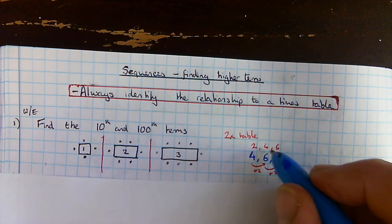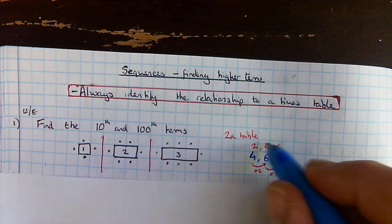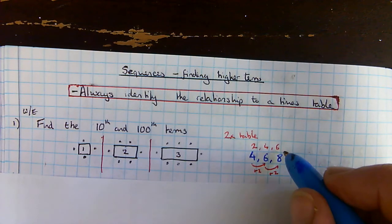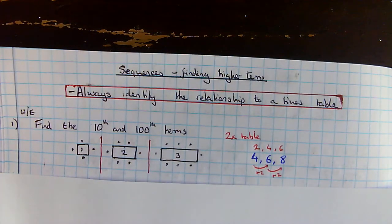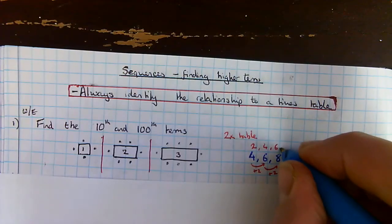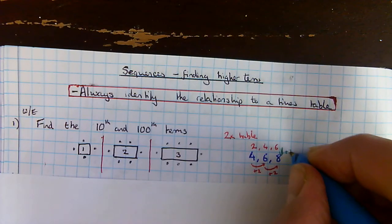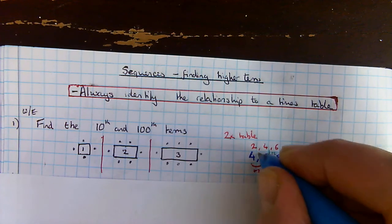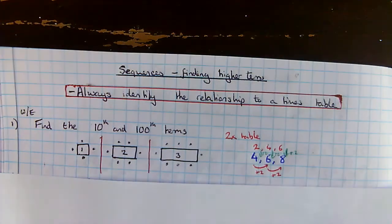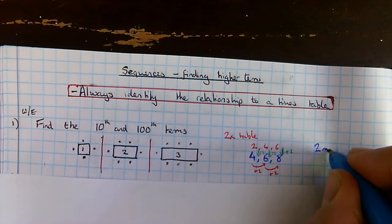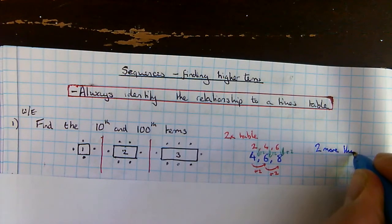Well, this is the two times table, this is my sequence. What's the relationship between the two? My sequence is, in every case, two more. It's two higher. I can think of this as the two more than two times table.